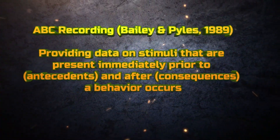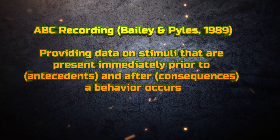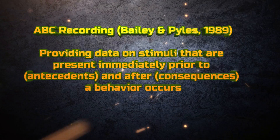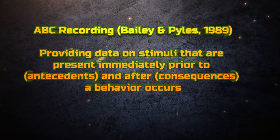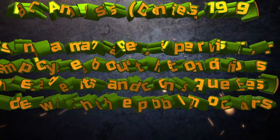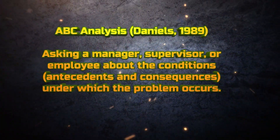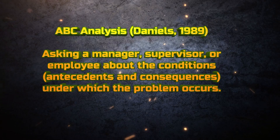This indirect method is called the informant or interview method of assessment. Bailey and Piles 1989 called it ABC recording, describing it as providing data on stimuli present immediately prior to and after a behavior occurs. Daniels 1989 called it ABC analysis and described it as asking a manager, supervisor, or employee about the conditions — the antecedents and consequences — under which the problem occurs.